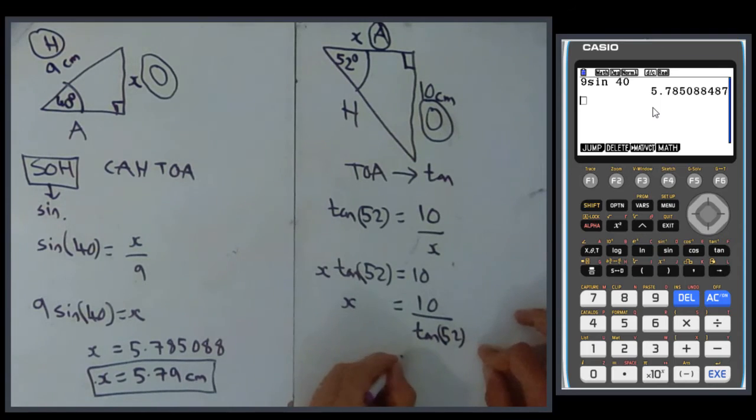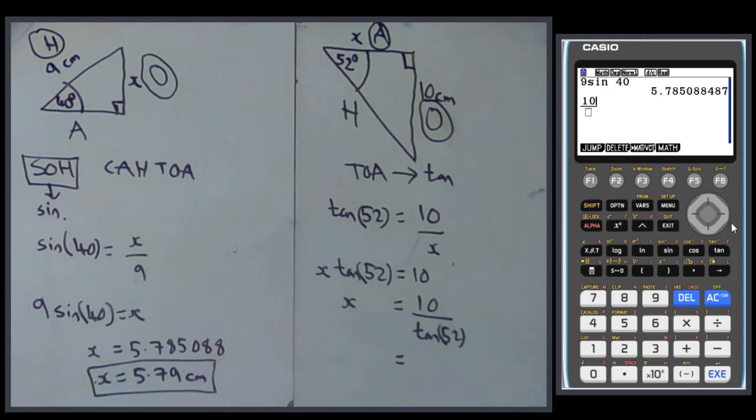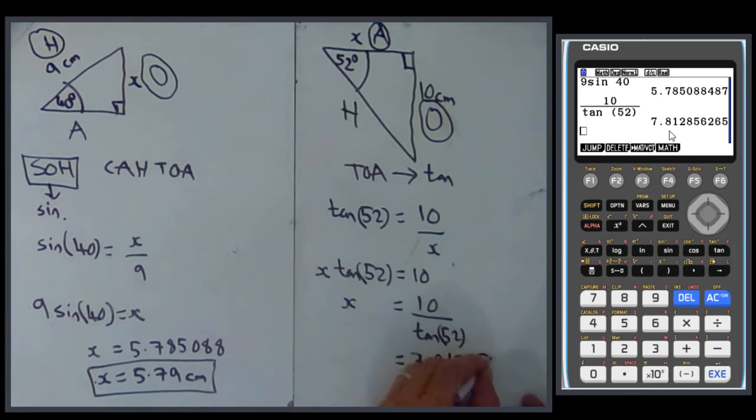So now I go to my calculator and I press 10 divided by, I'm going to put a bracket in this time, tan 52. Should do, it's good practice. That tells me that x is 7.8128562665.